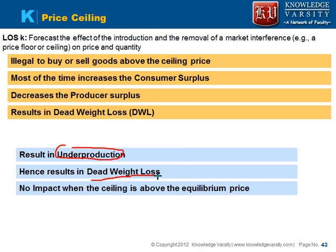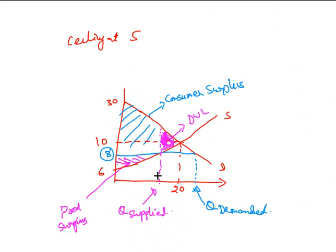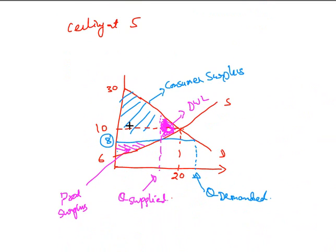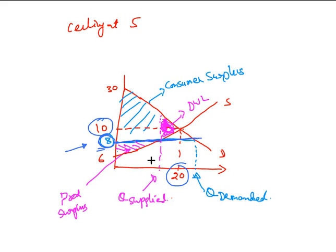Now we will see where the price ceiling has impact and where it doesn't. Looking at the diagram: the equilibrium price is 10 and the equilibrium quantity being sold was 20. Now the government has put a price ceiling of $8, meaning you cannot sell your product beyond $8. This is the ceiling price. When you start charging $8 to your customer, think about what happens to the demand.